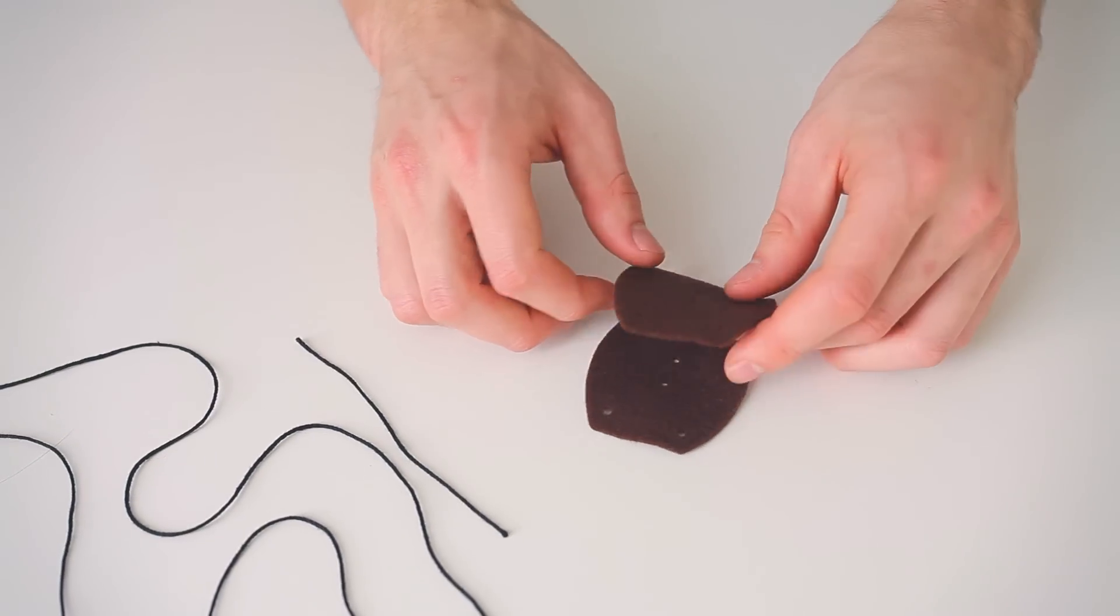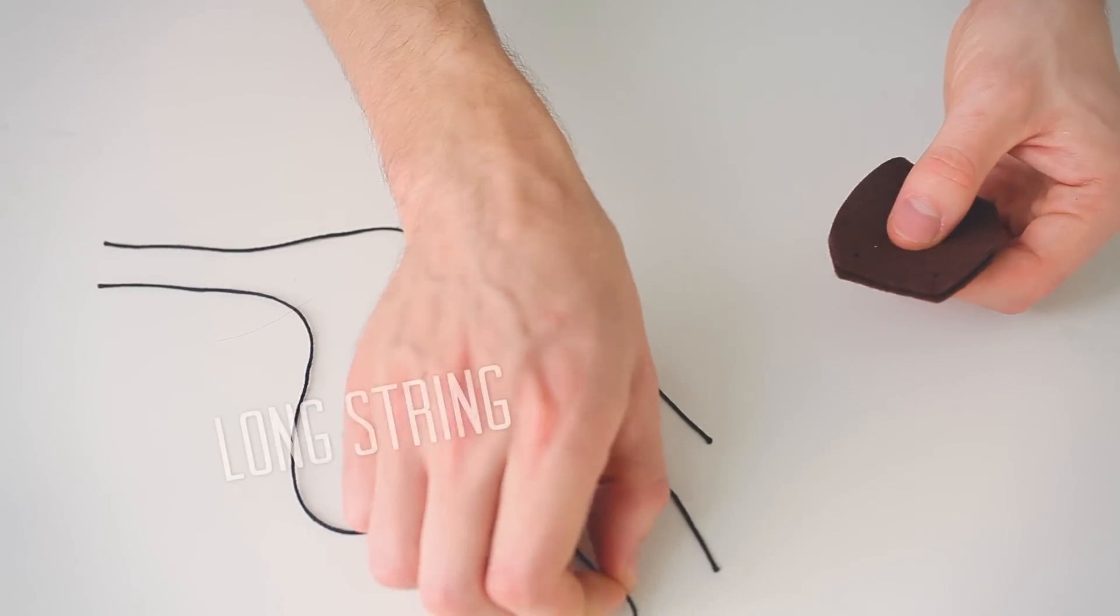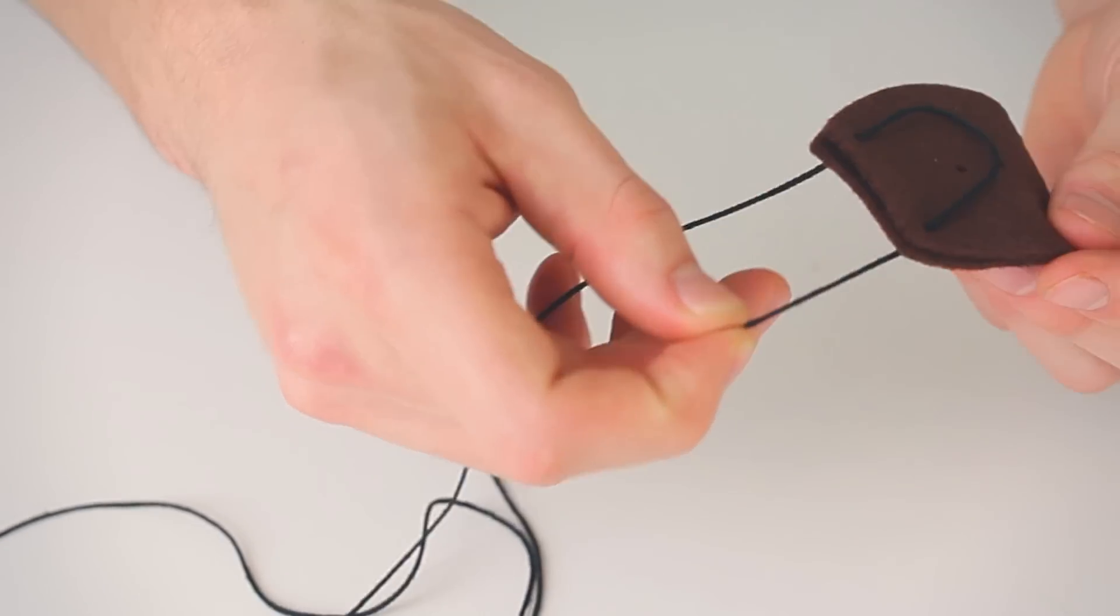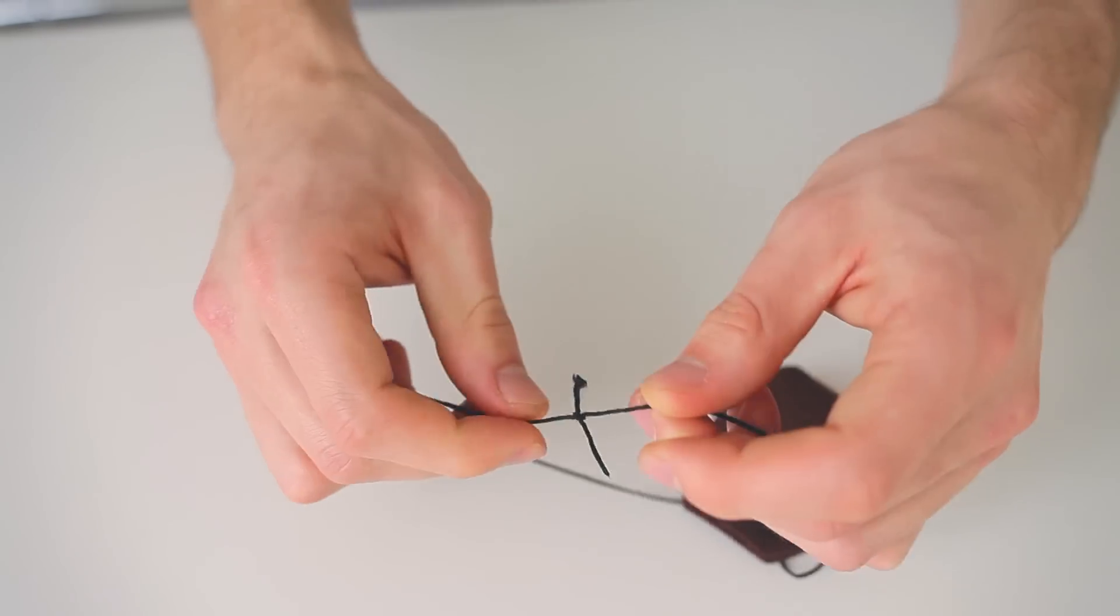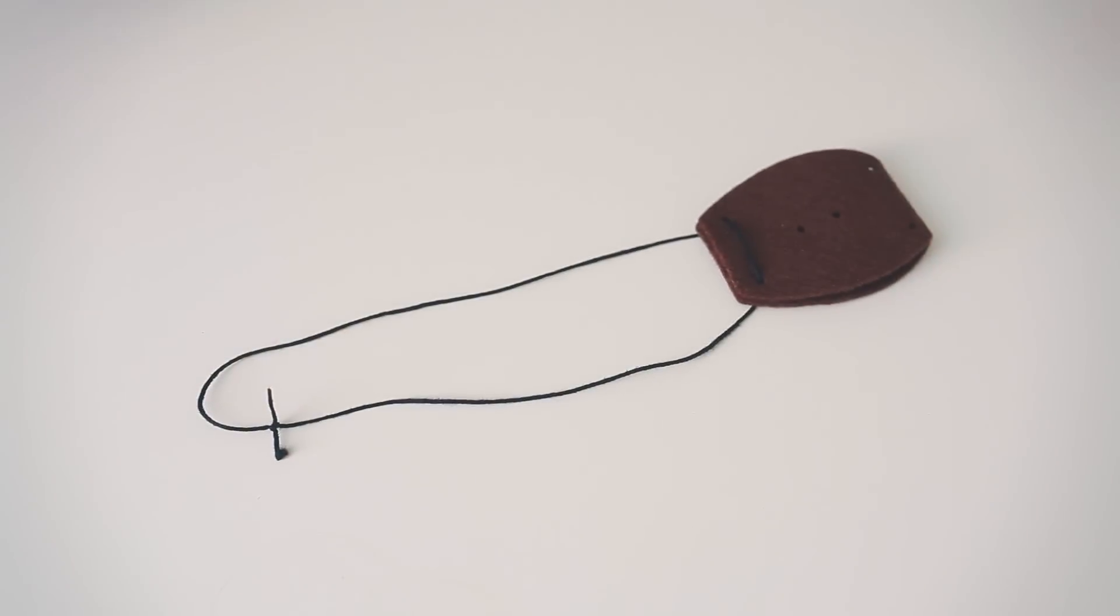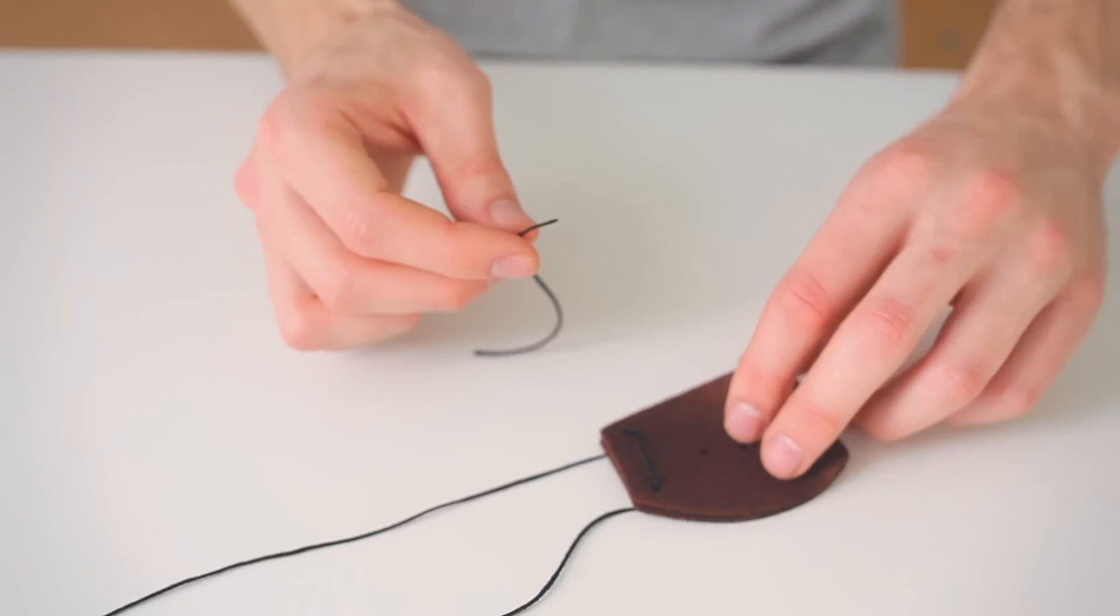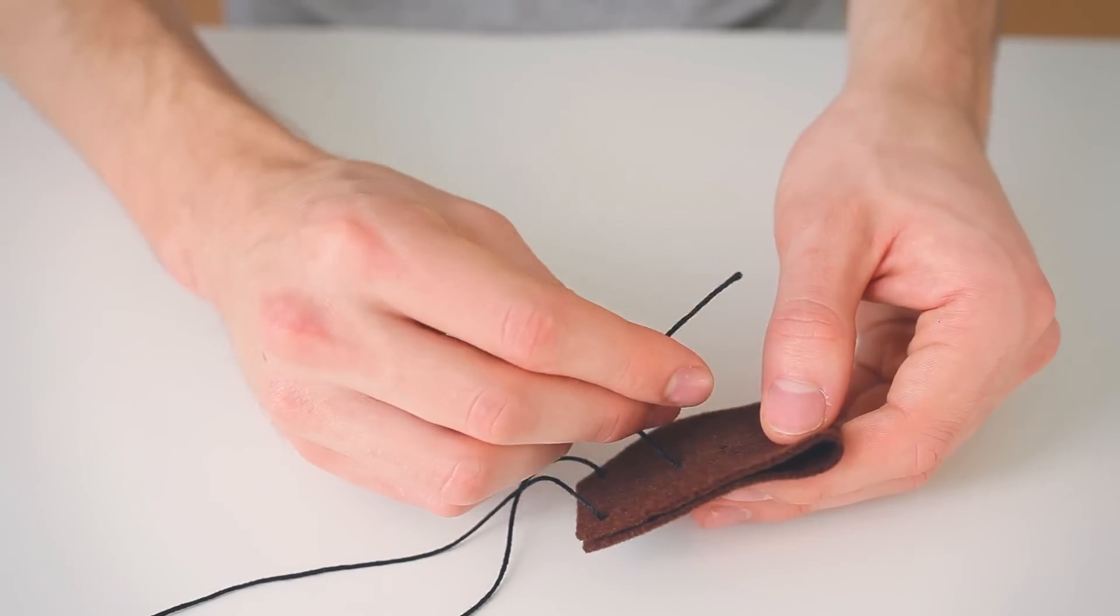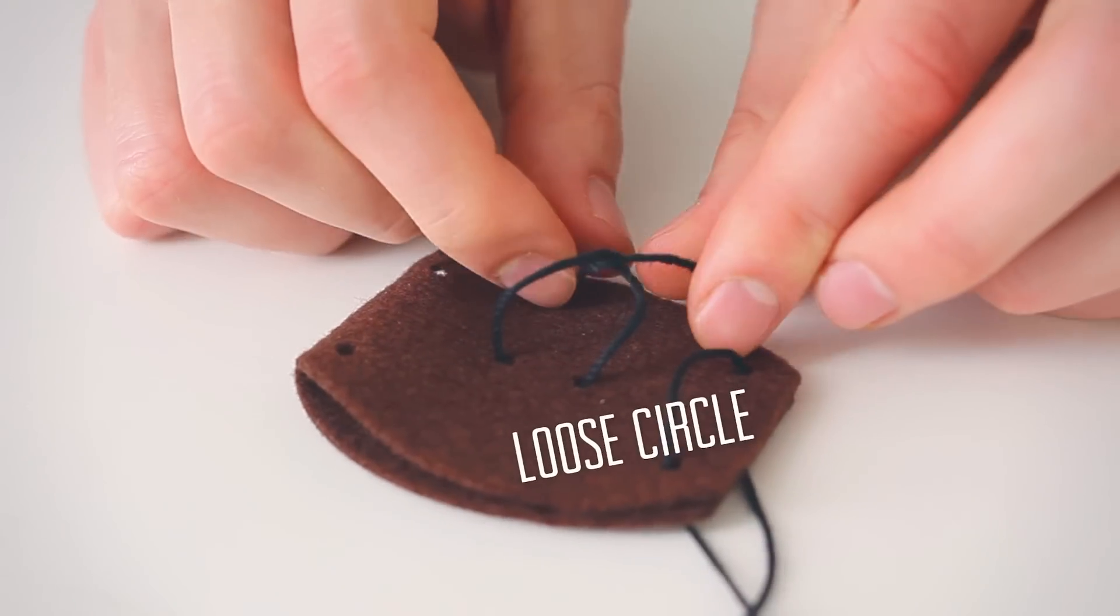Once you have the holes popped out, fold your fabric pouch in half. You'll see that the holes should line up. Then take one of your long strings and thread it through the top two holes just like this. Next tie a knot with the very ends of the string. Next take your short string and put it through the two middle holes in the pouch. Tie a knot with the ends to make a nice loose circle.